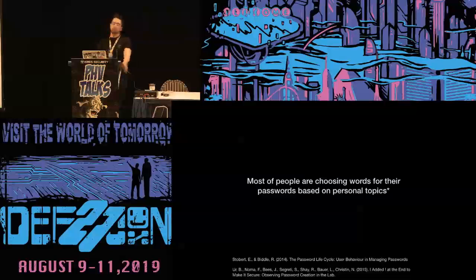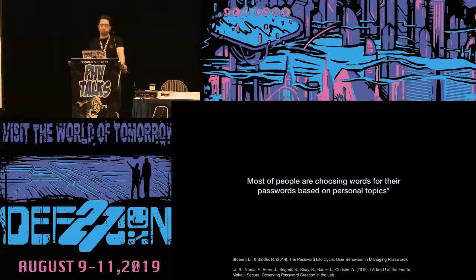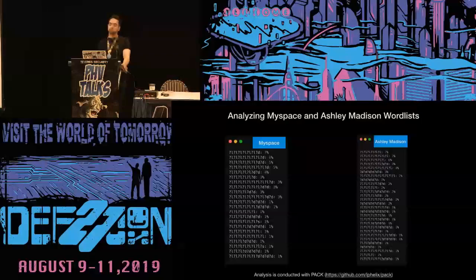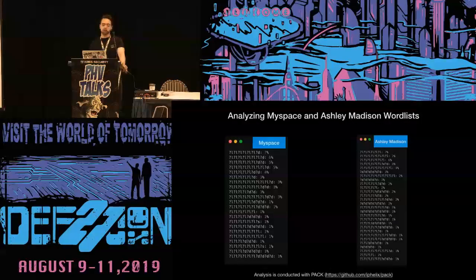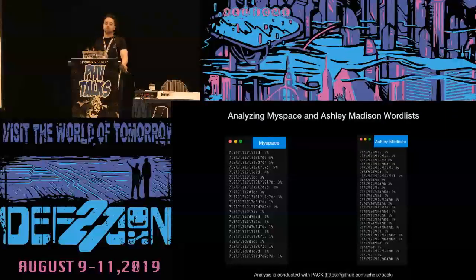According to research conducted by Carnegie Mellon University, most people choose words from their hobbies, sports, movies, etc. for their passwords. This means most user passwords contain meaningful words related to the password's owner. We can actually prove this: when we analyze the leaked MySpace and Ashley Madison password lists and generate the most used masks, we can see that almost 95% of those passwords are formed by sequential alphabetic characters, suggesting they are meaningful words.